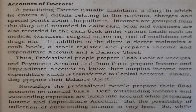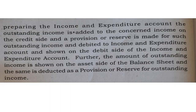Both outstanding income and outstanding expenses are taken into account while preparing the income and expenditure account. While preparing the income and expenditure account, the outstanding income is added to the concerned income on the credit side and a provision for reserve is made for such outstanding income and debited to the income and expenditure account on the debit side.